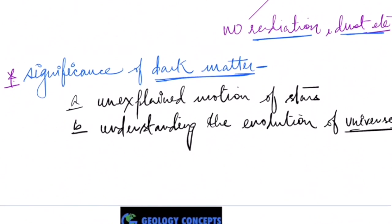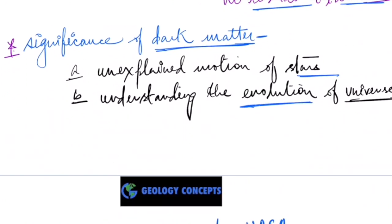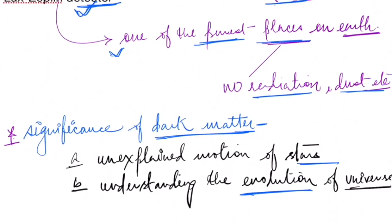The significance of dark matter: it can help explain the unexplained motion of stars, which cannot be understood through normal Newtonian mechanics. Including dark matter helps explain those movements. For understanding the evolution of the universe, focusing only on the visible 5% will not give correct answers. Dark matter and dark energy must be included in calculations to get reliable results, otherwise findings can be negated by new data.